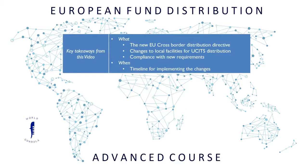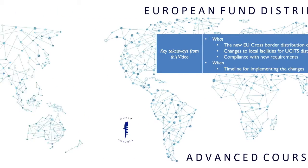This chapter will concentrate on what is the new EU cross-border distribution directive, what are the changes applicable to provision of local facilities for usage distribution, and what is required for compliance with the new requirements imposed by the directive. We will also talk about the timeline for implementation of the introduced changes.